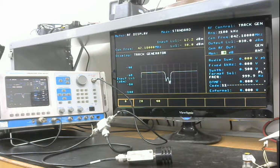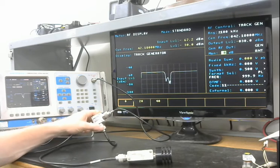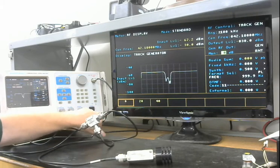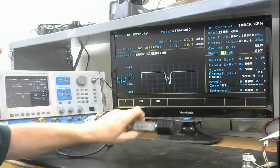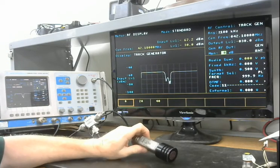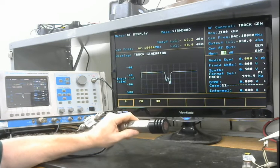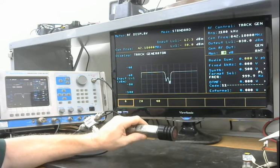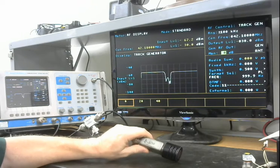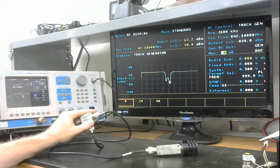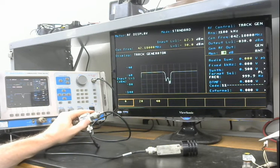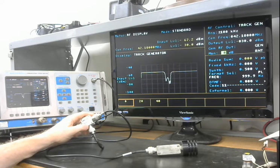Okay guys, in today's video I'm going to be using a service monitor in tracking generator mode with a directional coupler to look at the return loss of a crystal filter for a receiver. And I'm going to go over how to measure the bandwidth of the filter and also how the directional coupler works.